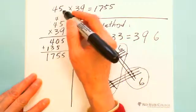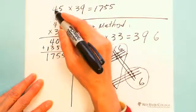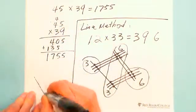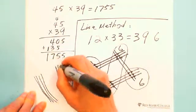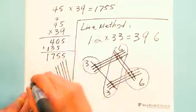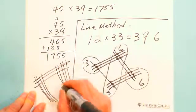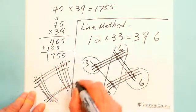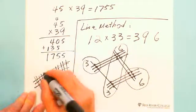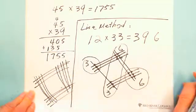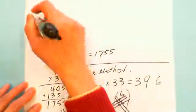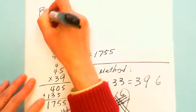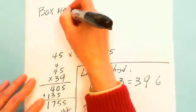If you do 45 × 39, you need to draw 4 lines, then 5 lines, and this is 3 lines and 9 lines. It's too much, too difficult. That's why the second method I introduce here is box method.